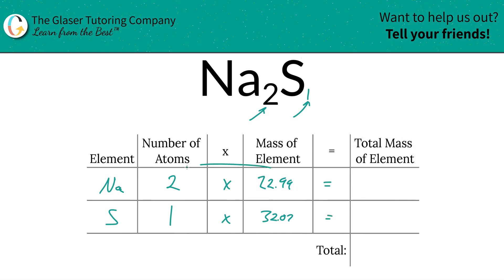And then to find the total mass of the element in the compound, just simply multiply this row on a cross. So for sodium, that's 45.98 units of mass. And then for sulfur, 32.07 units.